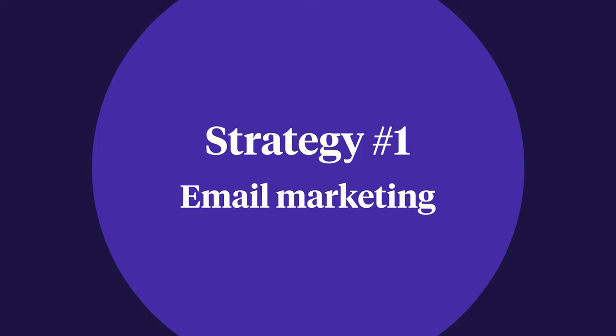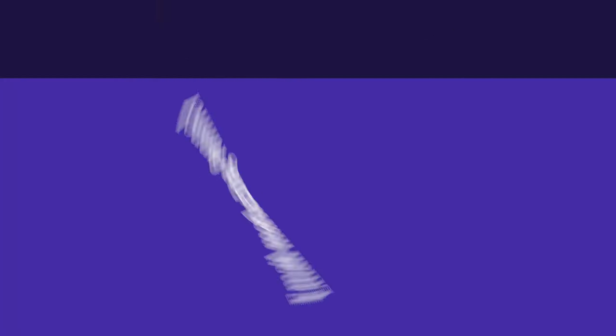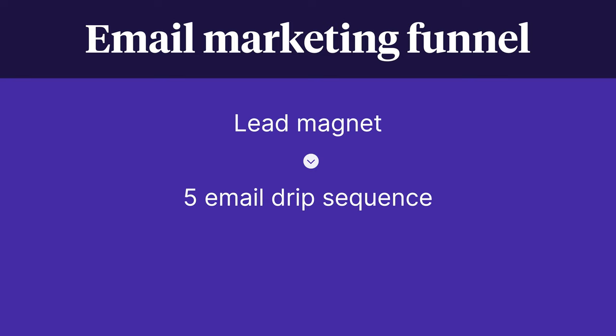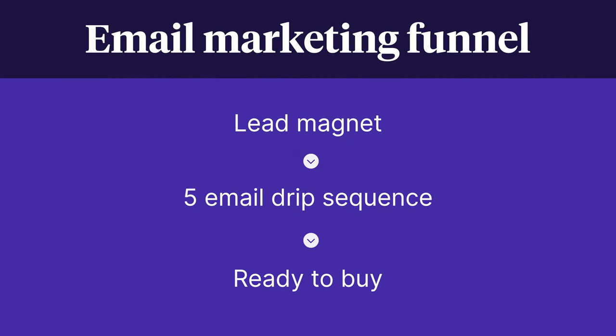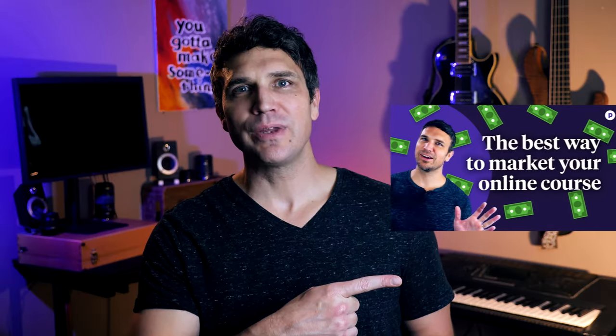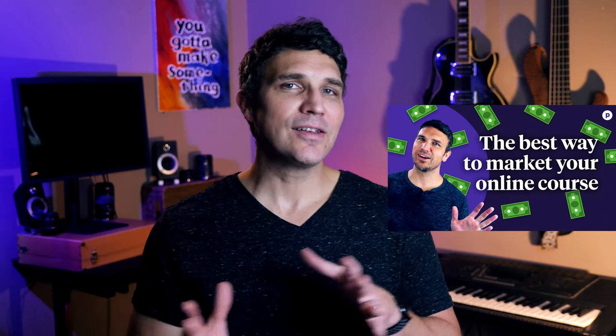Strategy number one: email marketing. Topping our list is one of the most effective marketing strategies. Email marketing is still a highly effective marketing channel, and with email automation you can build a sales funnel that will continue to market and sell your product even while you're sleeping. For most digital products, we recommend creating some kind of lead magnet to get people to sign up for your list, and then using a five-email drip sequence to sell your product — a series of five emails that go out to new subscribers automatically on a schedule, with each email designed to pull the subscriber further down the funnel so that by the last email they're ready to buy.